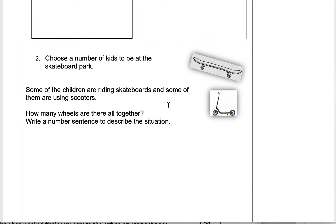This question is about skateboards and scooters at a skate park. You'll need to think about how many wheels skateboards have and how many wheels scooters have — do not just go by what's shown in the picture, think about it in your brain. Then you'll need to write out your number sentences. A number sentence is just a way of making a statement with numbers and showing the end result.